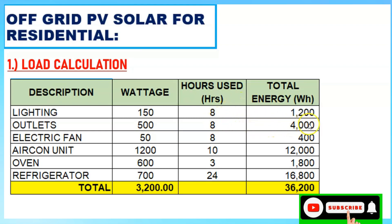For the electric fan — there are various types: ceiling fan, exhaust fan — assume 50 watts used for 8 hours, giving 400 watt-hours. For the aircon unit, the load is heavier: 1,200 watts, used for 10 hours, giving a total energy of 12,000 watt-hours.